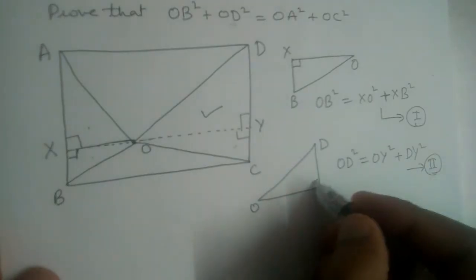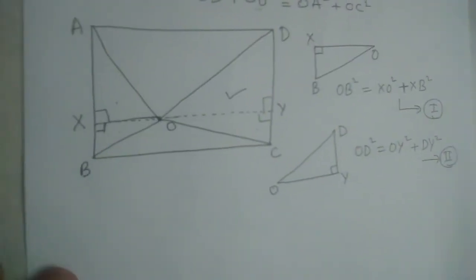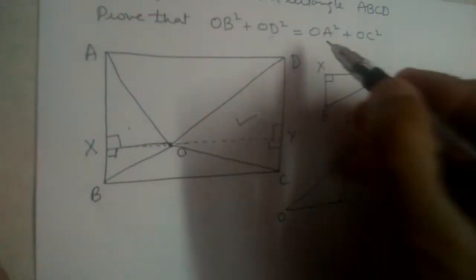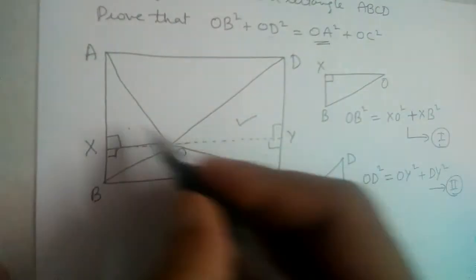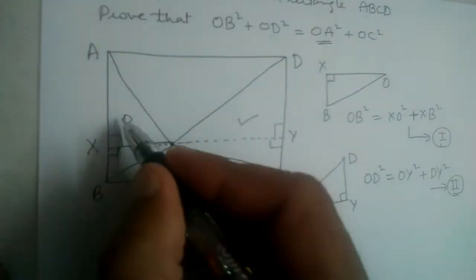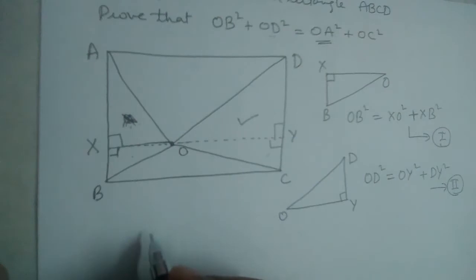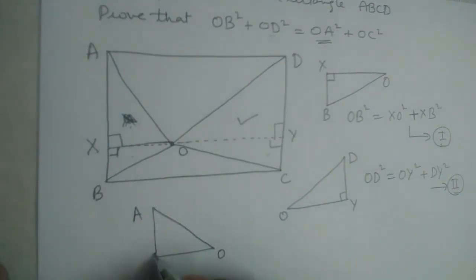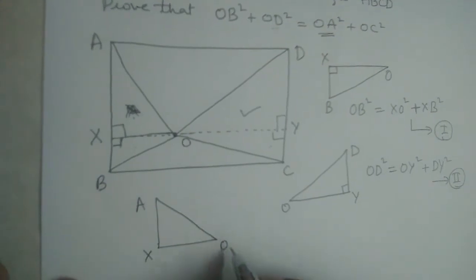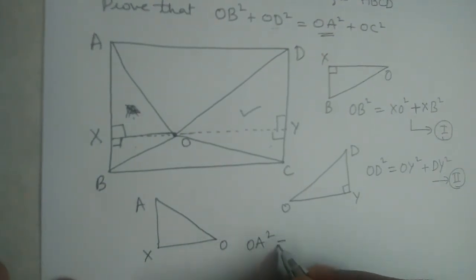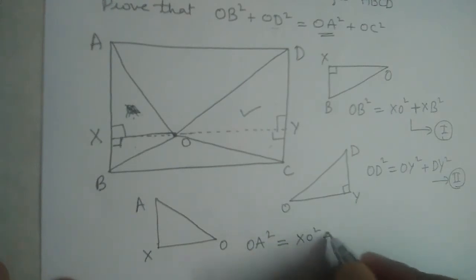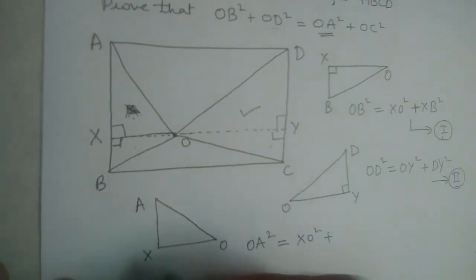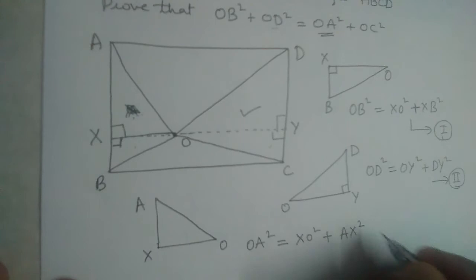Y is 90 degrees — we applied Pythagorean theorem. Now we need OA². So let us take triangle OAX and apply Pythagorean theorem. OA² = XO² + AX². Let this be equation three.